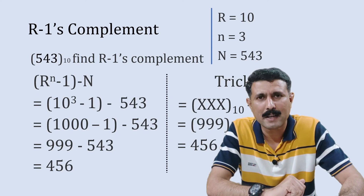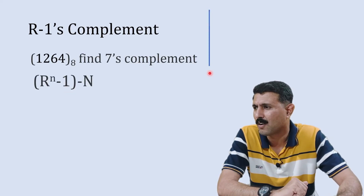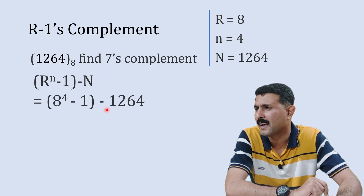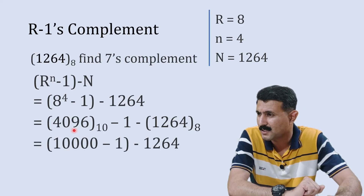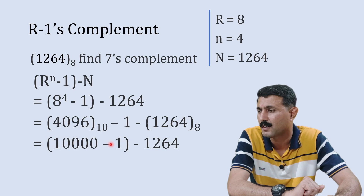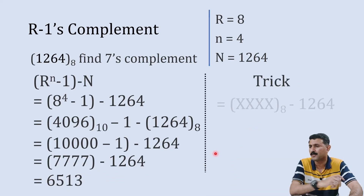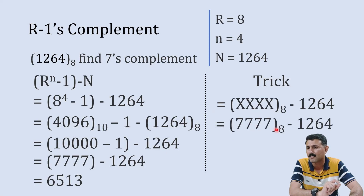One more example: find the 7's complement of octal 1264. Using the equation: r is 8, n is 4, N is 1264. 8 raised to 4 minus 1 gives 7777 in octal. Subtract 1264 from 7777 to get 6513. Using the trick directly: the largest octal digit is 7, so write 7777 minus 1264 — the answer is 6513 immediately.